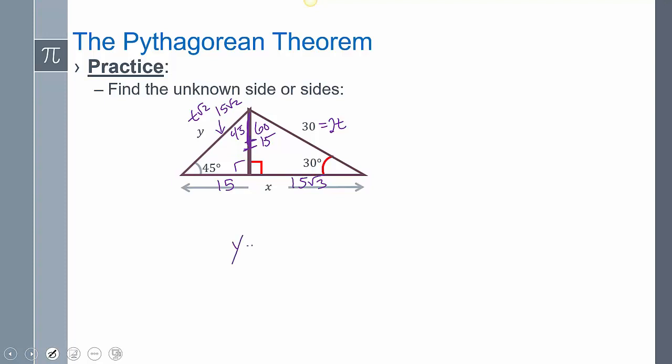So for my Y, I have 15 root 2, and then I have to add these together. Now, we don't say 15 plus 15 root 3 is 30 root 3. They're two different terms. We have to leave them separate like that. And that's our answer.